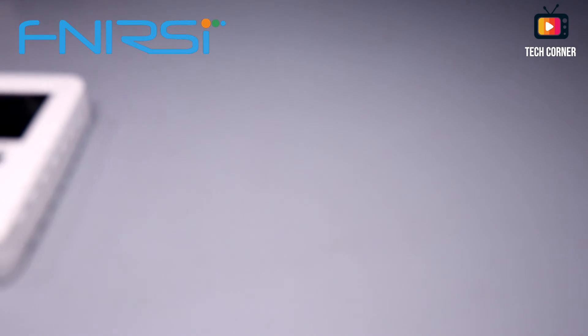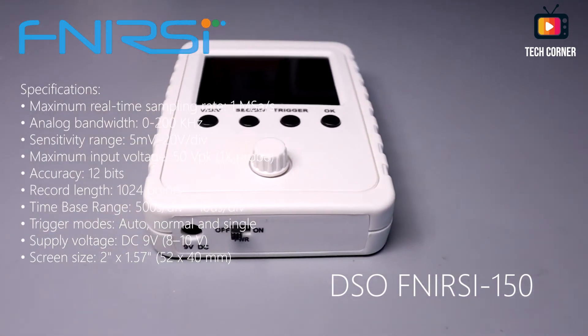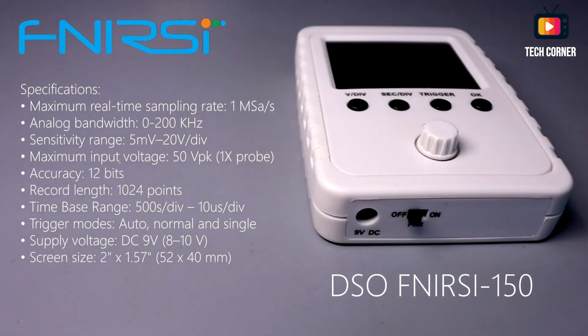So let's start. We have here a DSO FNIRSI 150 Oscilloscope that has a maximum real time sampling of one mega sample per second. It has a maximum analog bandwidth of 200 kilohertz and a sensitivity range from 5 millivolts per division to 20 volts per division. Regarding the maximum input voltage, it's 50 volts peak to peak using a one times probe. It has also a 12 bits accuracy. Not bad at all for a device like this.